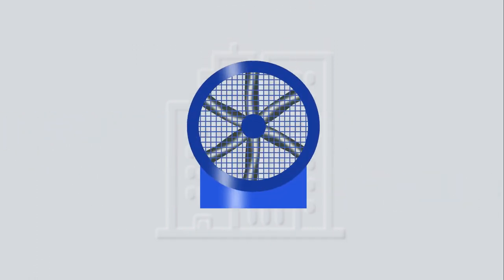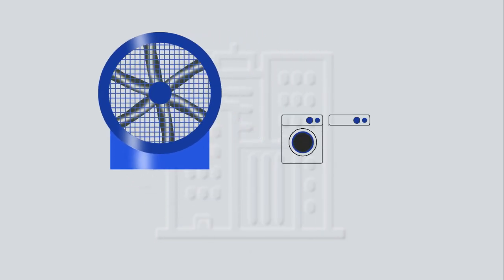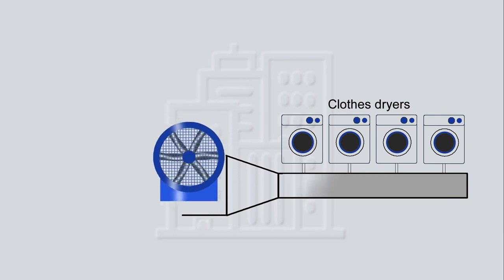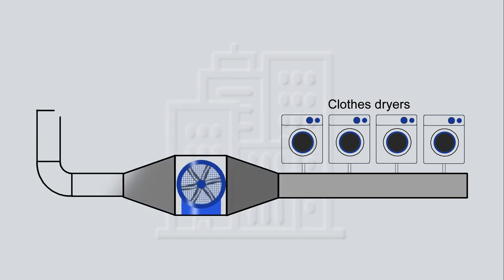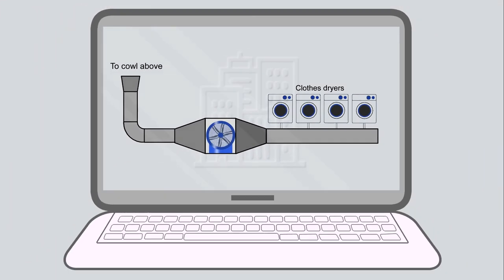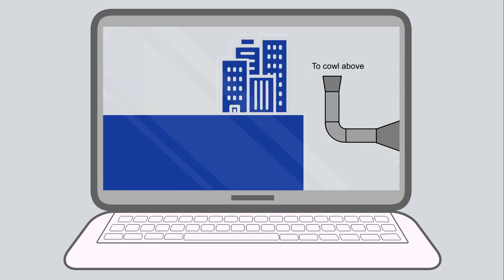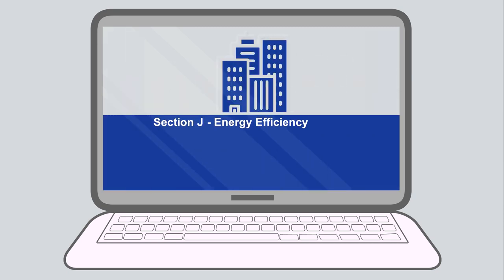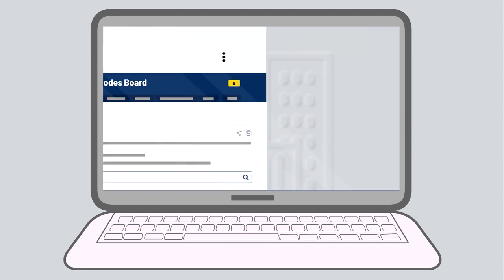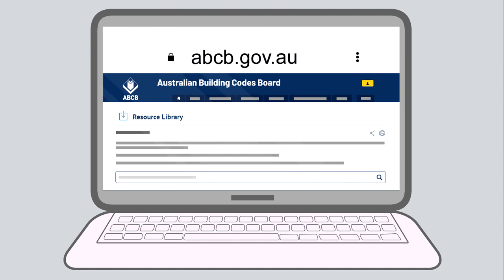This tutorial demonstrates using the Fan System Calculator to assist verifying compliance of a building's heating, cooling and/or ventilation design with the NCC. The Fan System Calculator is a non-mandatory guidance tool that helps you apply the deemed-to-satisfy provisions of Clause J5.4 in NCC Volume 1. The Calculator is a Microsoft Excel-based tool and can be downloaded from the ABCB website.